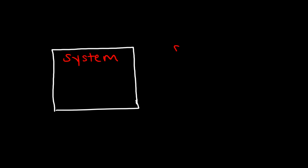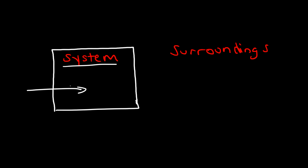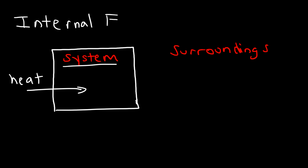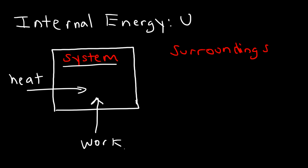If we have a system and everything outside of it is the surroundings, energy can flow into or out of the system in two ways: through heat and through work. If heat flows into the system, the system gains energy, and that energy is known as the internal energy of the system, represented by the symbol U. The surroundings can also do work on a system.